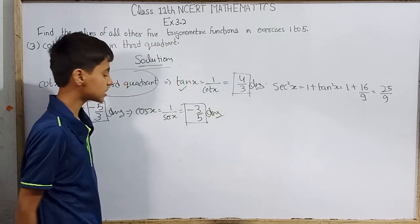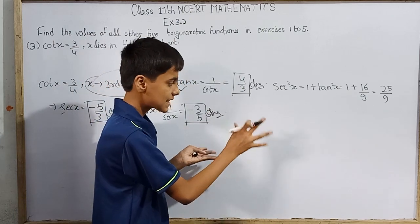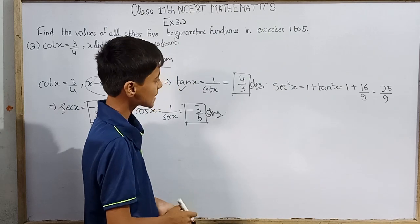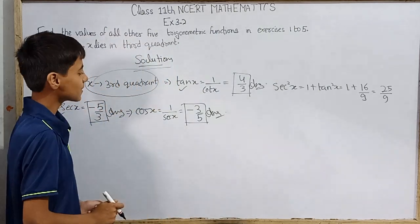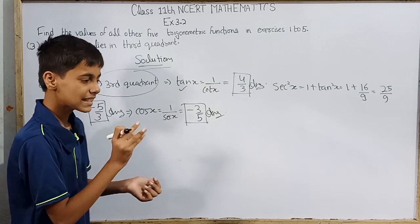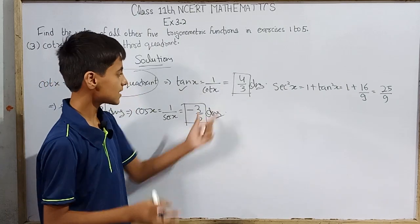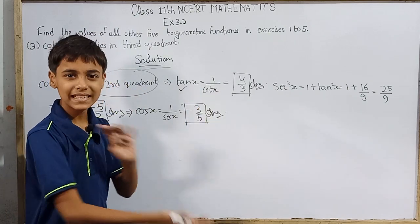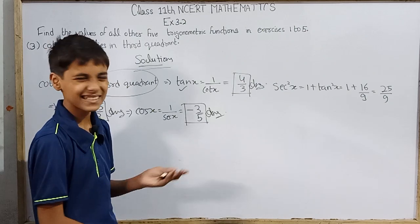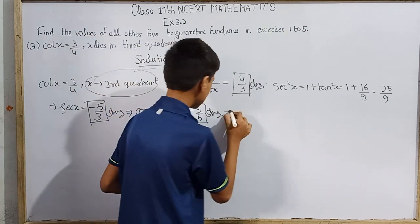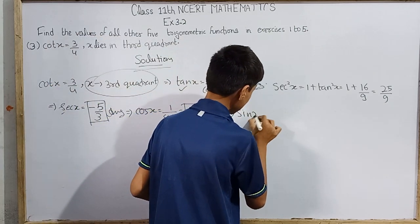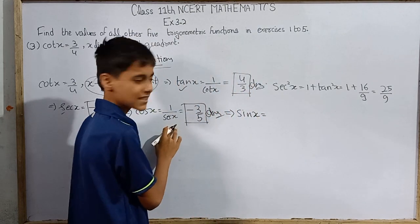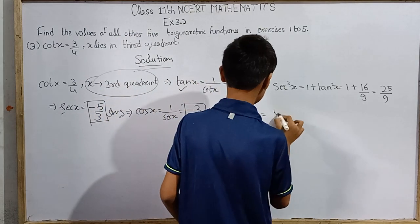Now if we want to use cos²(x) plus sin²(x) equals 1 to find sin(x), there's no requirement for that. Because we know that tan(x) is sin(x) over cos(x). We know tan(x), so we will multiply directly. We won't add and do root - we'll multiply directly. If we have tan(x) and cos(x), we can easily find the answer.